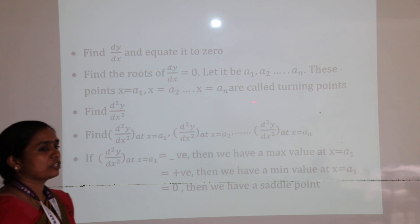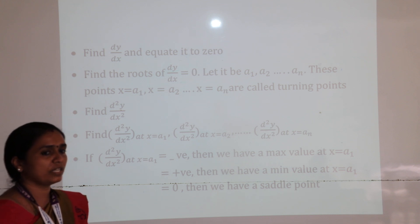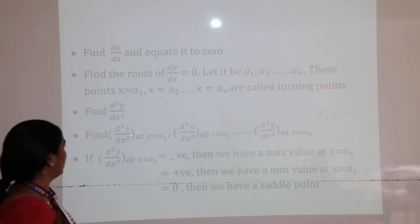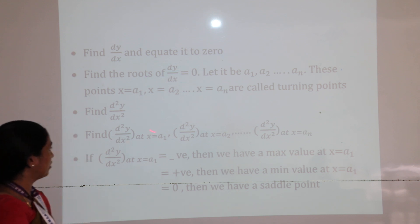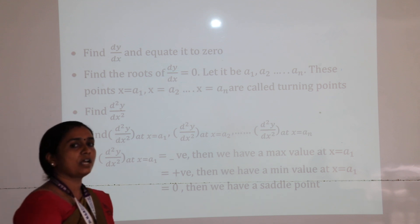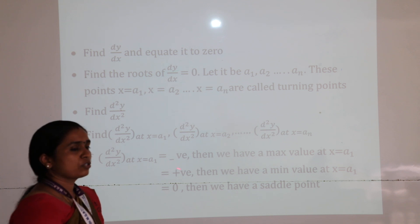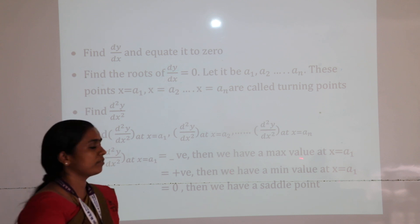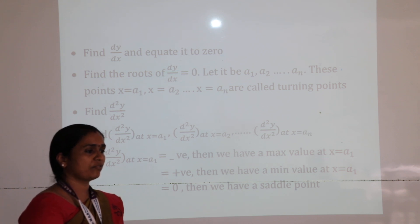Now we cannot predict whether each stationary point is a maximum or minimum, so we have to go to the next step: the second derivative, which is the rate of change of gradient. We find d²y/dx² and substitute all the stationary points into it — putting x = a₁, x = a₂, etc. If the value of d²y/dx² is positive, then it is a minimum point. If it is negative, then that point is the maximum point. Otherwise, it is a point of inflection.